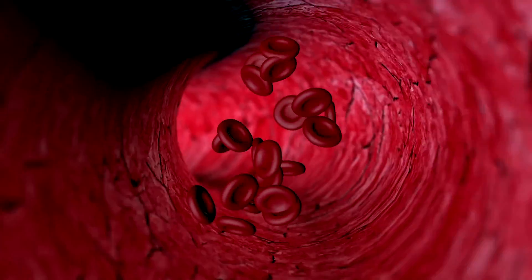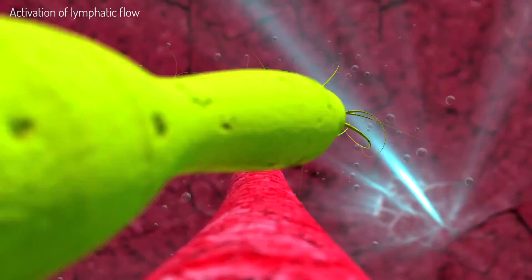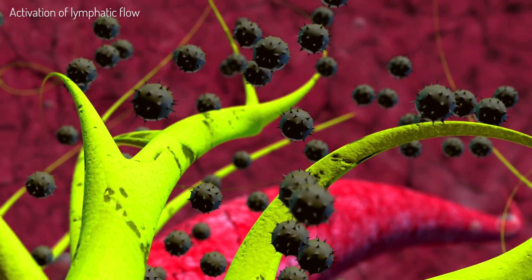While the circulatory system circulates blood, the lymph system moves lymph fluid throughout our body. Lymph fluid acts like the clean-up crew of our body.